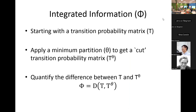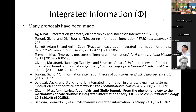Here's the general framework for integrated information. You start with a Bayesian or causal network — I'll call it a transition probability matrix since everything's discrete here. You apply a minimum partition, call it theta, to cut the matrix, and you get a cut transition probability matrix T_theta. Then you need some distance measure between the two. This is a general framework, and in fact there have been many proposals for different ways to operationalize each part: how do I cut it, what does cutting do to the TPM, what's the right distance measure? Is it probability of future state, probability of past state? Does one part say something about the other, or is it about the whole or the parts? There are all kinds, and Max Tegmark has a paper where he does a taxonomy of these things and outlines the three major decisions that need to be made.